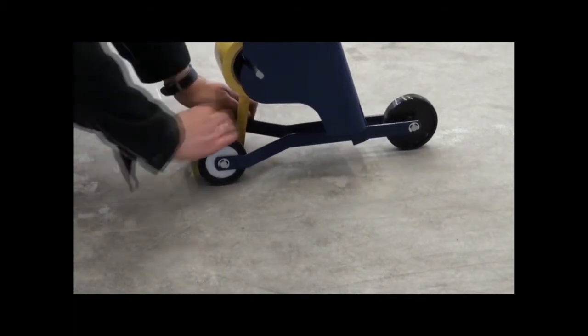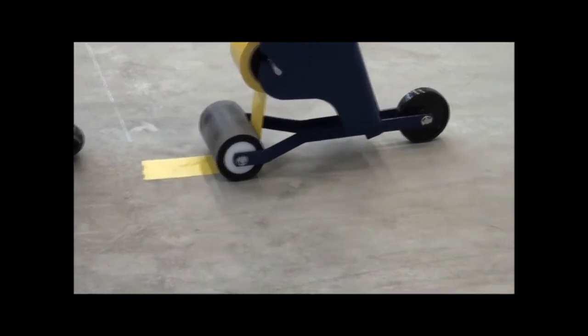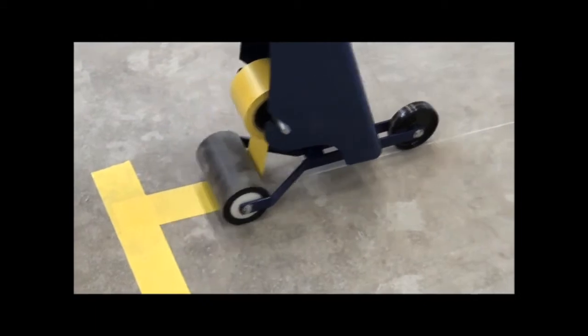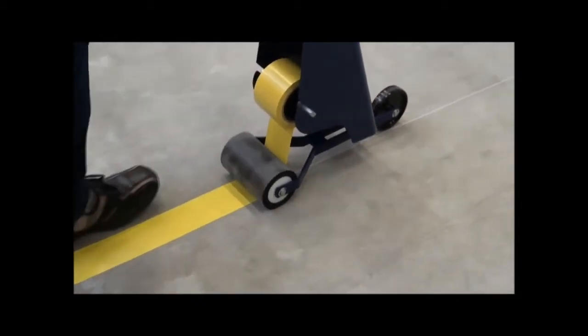When you are ready, feed the tape from the dispenser to the applicator wheel and by following the pre-determined lines with the guide wheel at the front, the tape will be attached and pressed firmly to the floor.